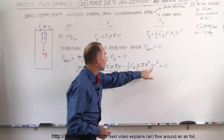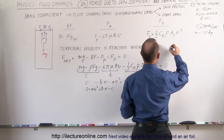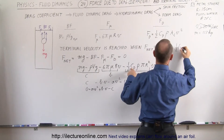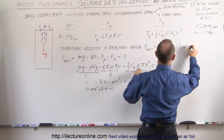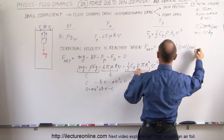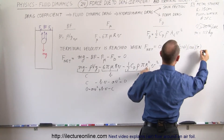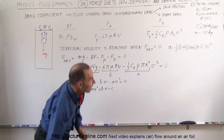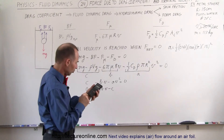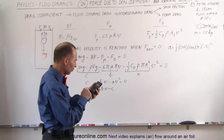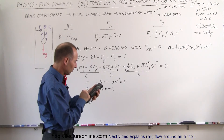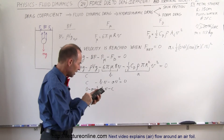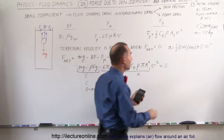A is the coefficient of the V² term: A equals one-half times the drag coefficient 0.47 for a sphere, times the density of the liquid (water, 1000 kg/m³), times π, times the radius squared (0.15 m)². Calculating: 0.5 × 0.47 × 1000 × π × 0.15² = 16.6.